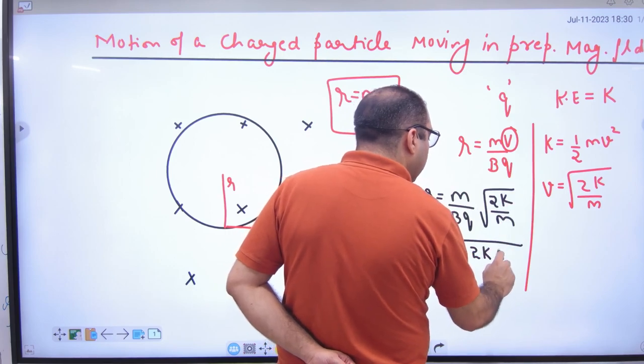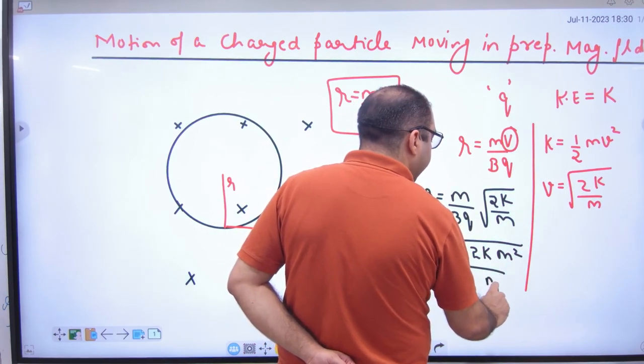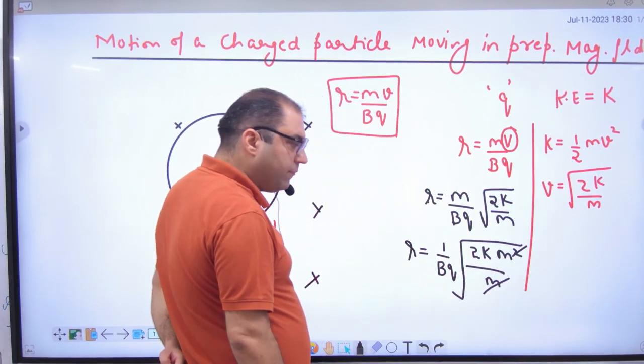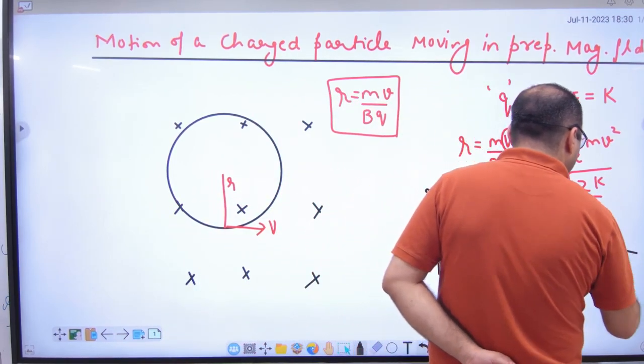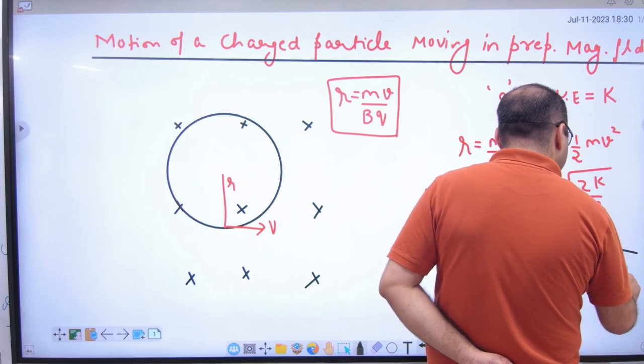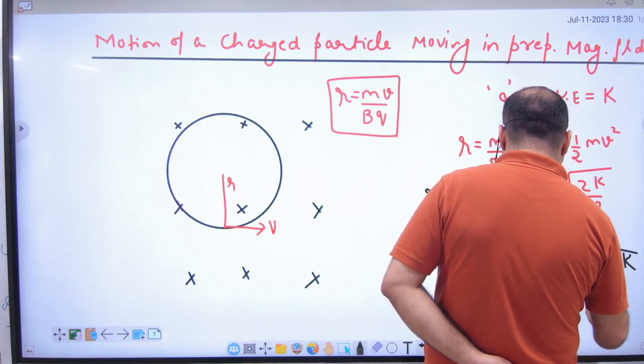When mass goes under the root, m becomes m squared, and then m cancels with m. So the value of radius becomes the square root of 2mK divided by bq.